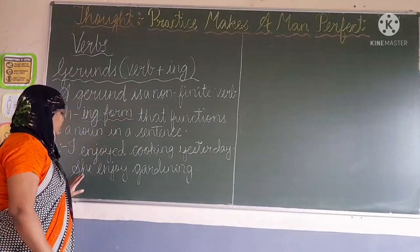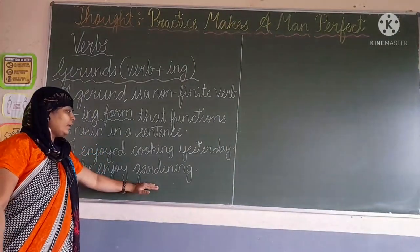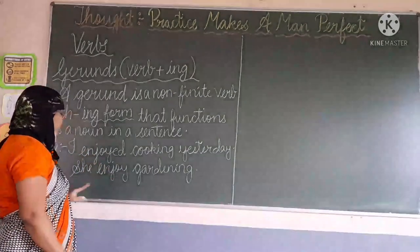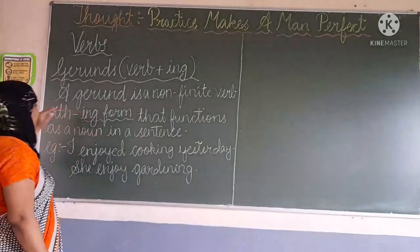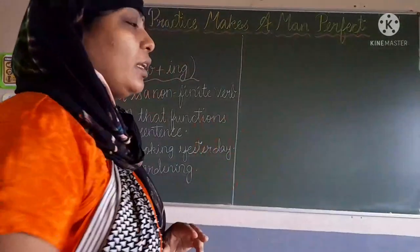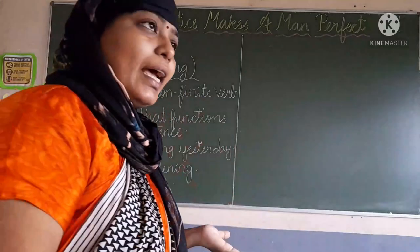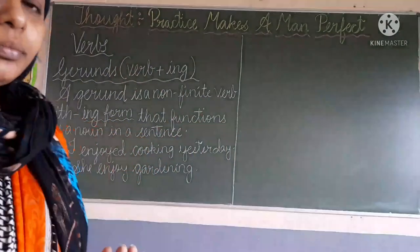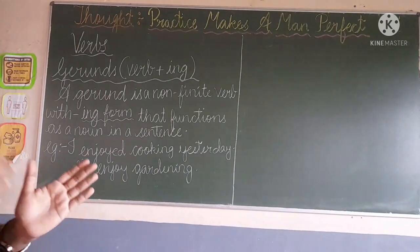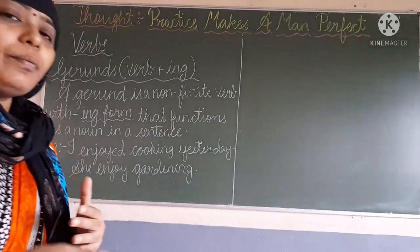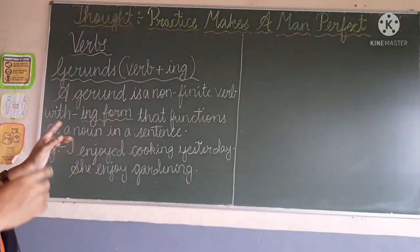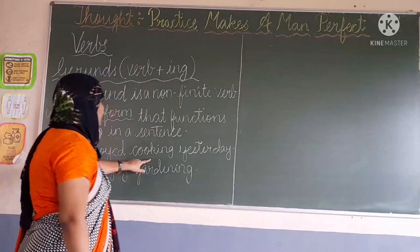'She enjoys gardening.' Garden plus ING — gardening. 'She enjoys gardening.' Whenever we write this sentence, it is not necessary to change the sentence in tense or in number. We have to write with the verb and add ING — we always write the ING form with the verb.